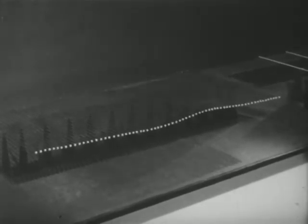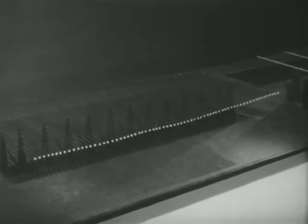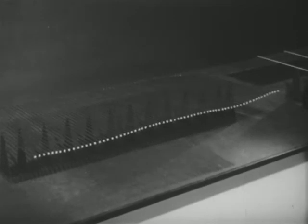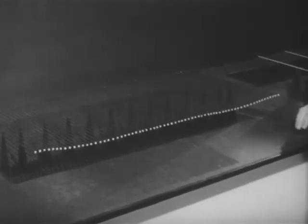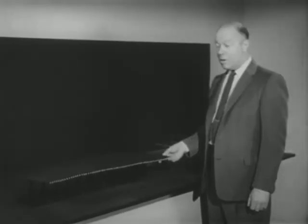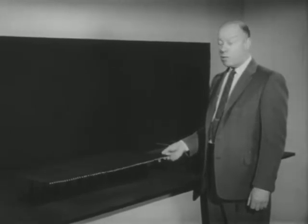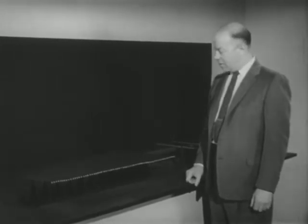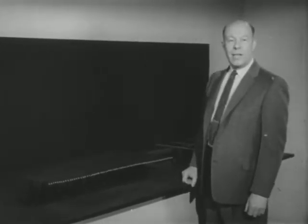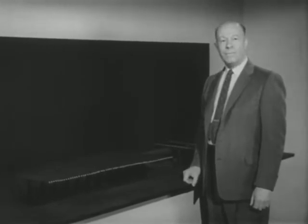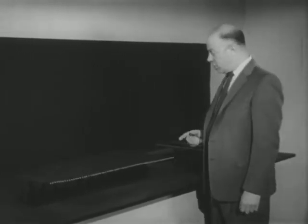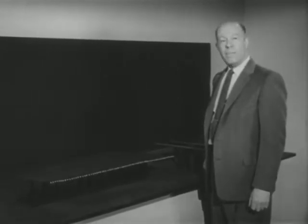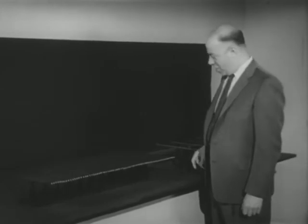The pulse eventually dies out — you've seen examples of this before with the slinky on the tabletop. This machine has a lot less friction than the slinky, so it's not surprising the pulse lasted a great deal longer. Now let's see this happen again in slow motion at about half the normal speed.